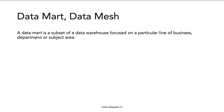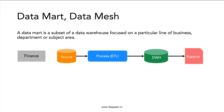What is a Data Mart? It is a subset of a data warehouse focused on a particular line of business, department, or subject area. So when we say Data Mart, it is basically a subset of a data warehouse. We create data warehouses for different lines of business, different departments, or different subject areas. For example, let's say we have a finance department with multiple sources. They do the ETL process and load data into a data warehousing system, and then reports are generated from that system. So this DWH is called a Data Mart for the finance department.